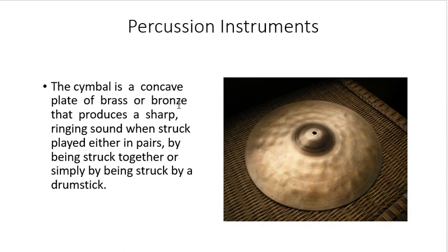We also have the cymbal. The cymbal is a concave plate of brass or bronze that produces a sharp ringing sound when struck — played either in pairs by being struck together, or by being struck with a drumstick. The cymbal is the western equivalent of the gong; in western tradition it is used in pairs, while in eastern tradition a single one is struck by hand.